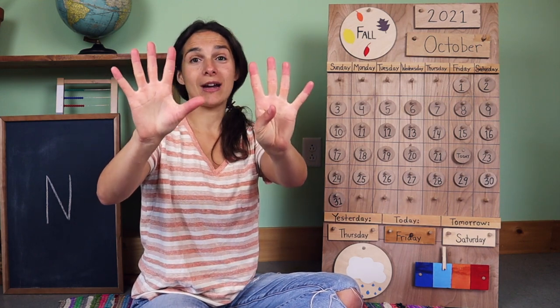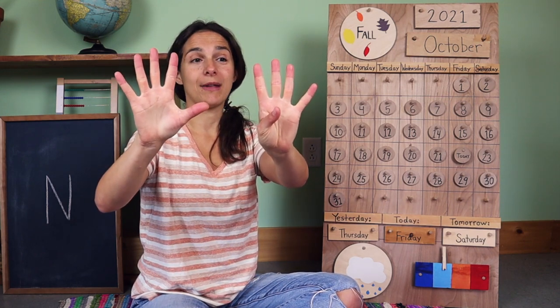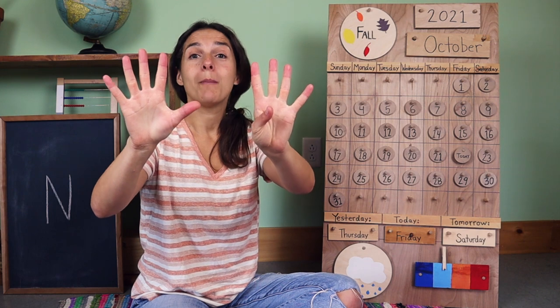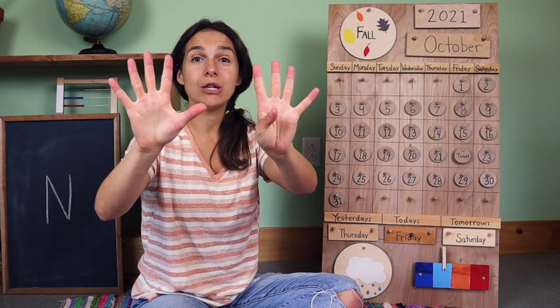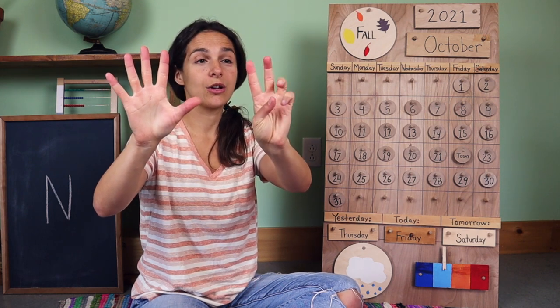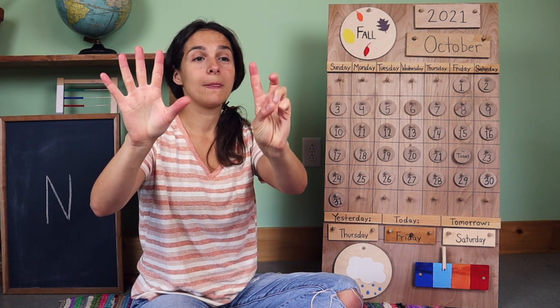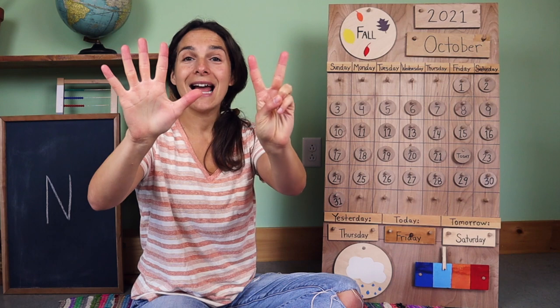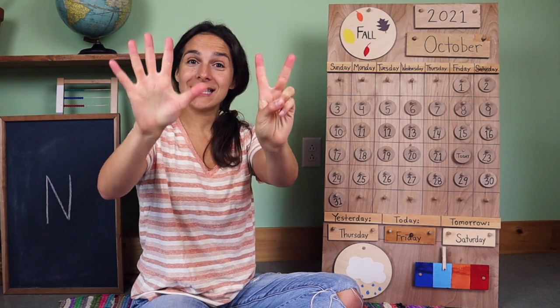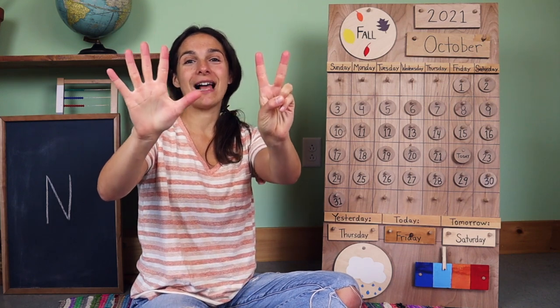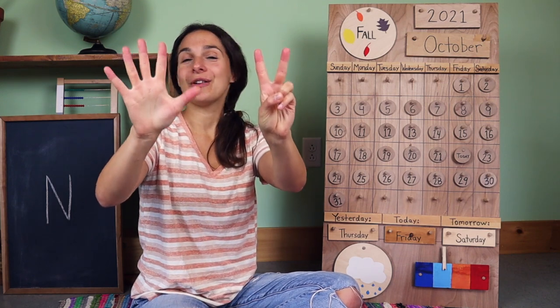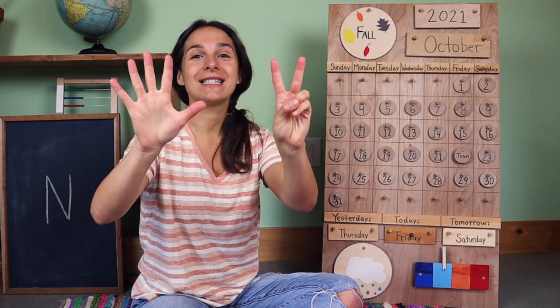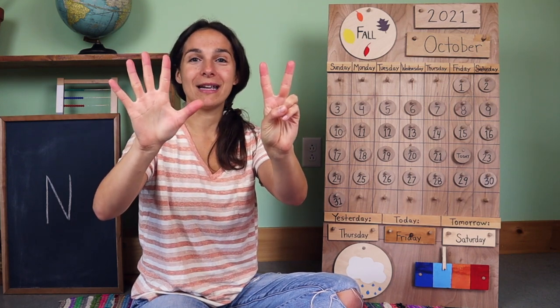If you keep your nine fingers up like this, but you take away two fingers — one, two — now you have seven fingers left, and it looks like we're ready to sing the day of the week song.